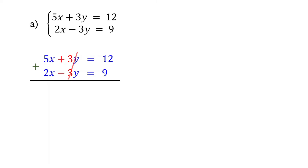Now let's add the other terms. 5x plus 2x equals 7x, and 12 plus 9 equals 21. Then divide both sides of the equation by 7 to isolate x. Cancel out these, and 21 divided by 7 is equal to 3.